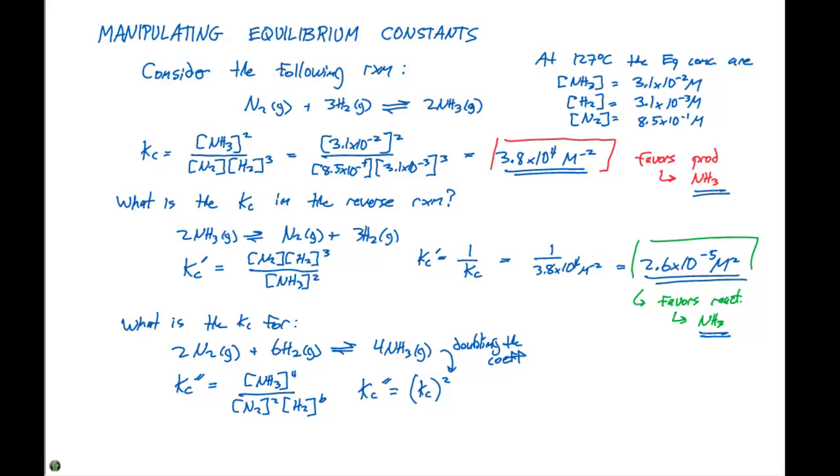So if we wanted to calculate Kc double prime, we simply take our Kc, which is 3.8 times 10 to the fourth, and we square that. And that will give us 1.4 times 10 to the ninth.